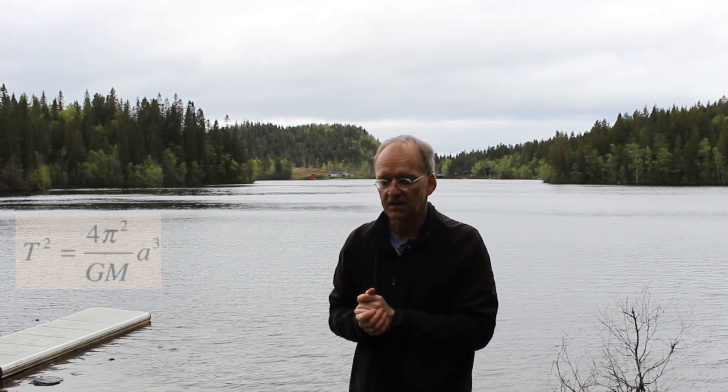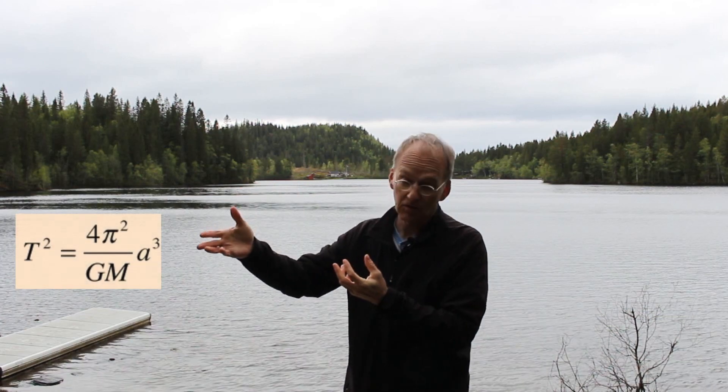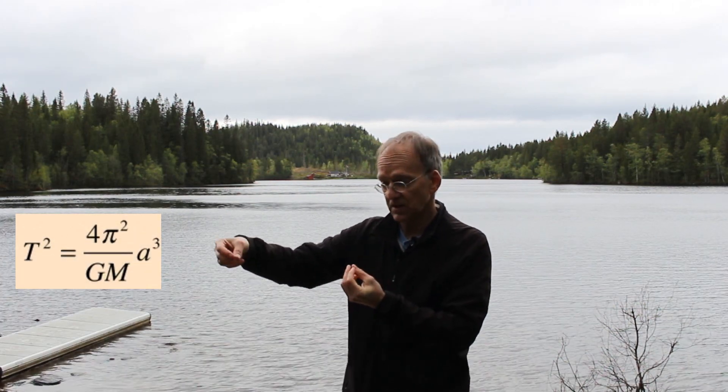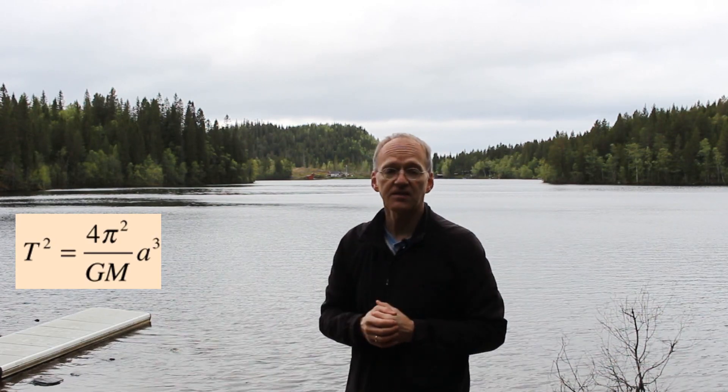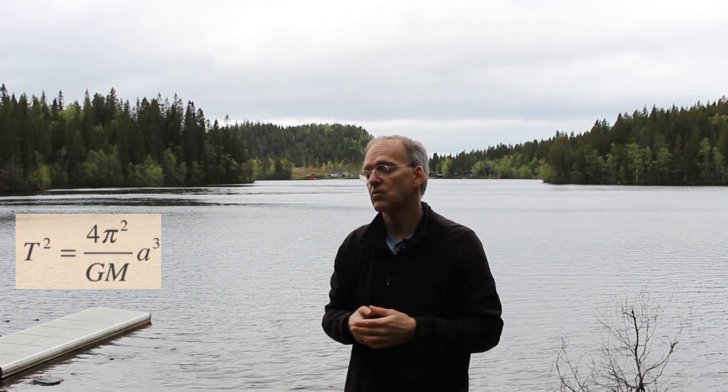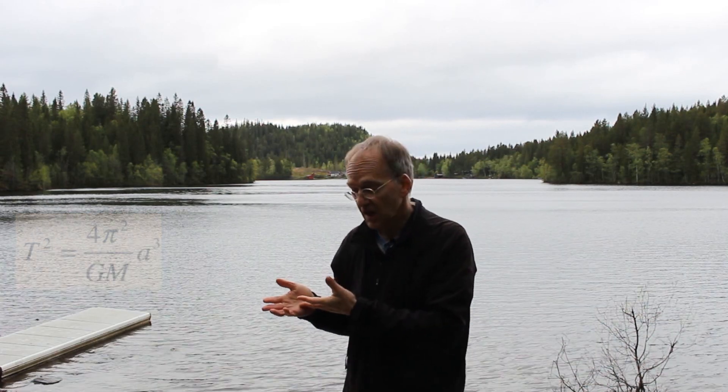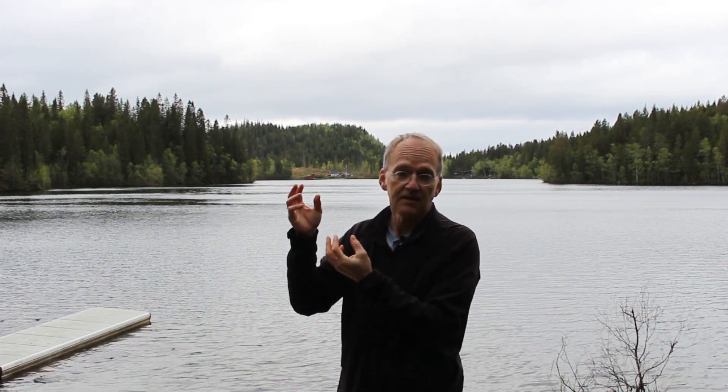What you can determine very precisely, according to Newton's law, is the product of the gravitational constant and the mass of the respective celestial body. For example, you look at the moons of Jupiter and you can determine the mass of Jupiter times the gravitational constant. Or you look at the moon and the mass of the earth, or the earth's orbit and the mass of the sun times the gravitational constant. But you cannot separate these two factors, and that was a big problem.